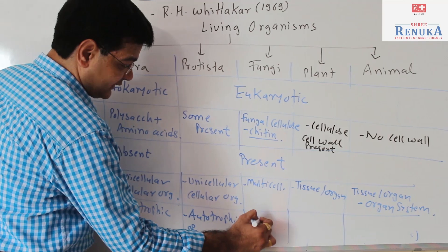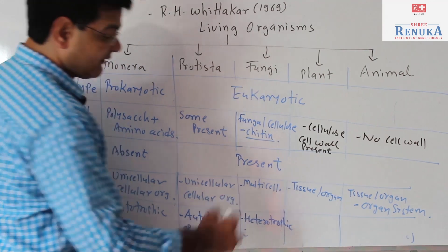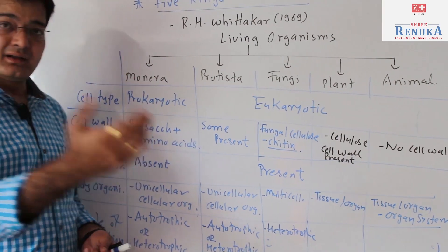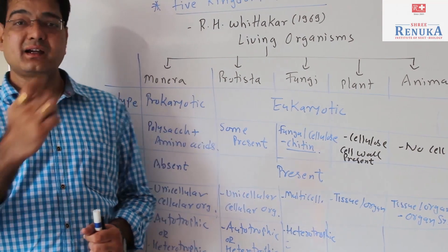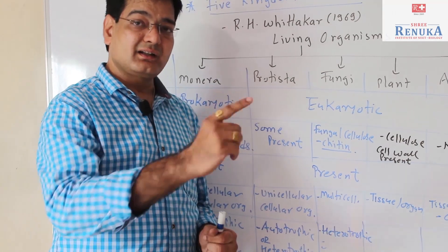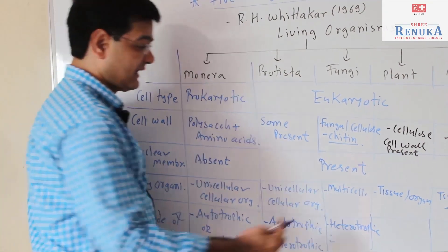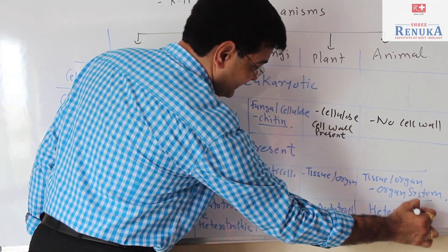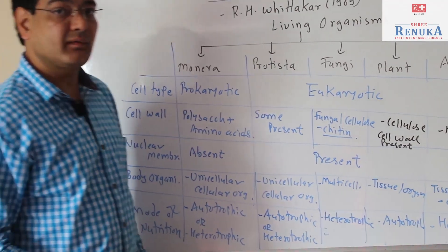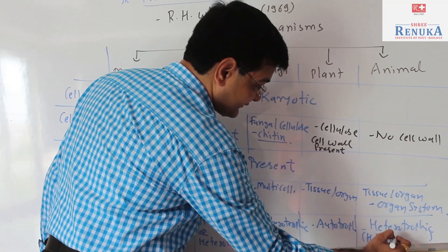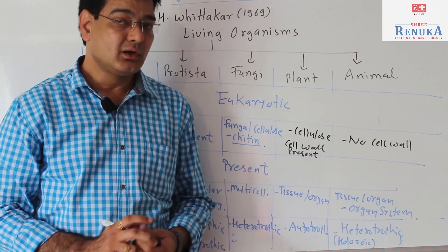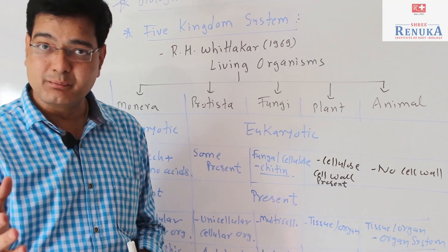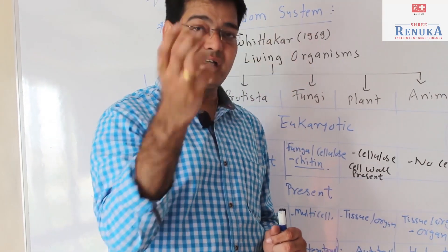Fungi are always heterotrophic — saprophytic or parasitic in their mode of nutrition. They get nutrition from decaying organic matter, making them saprophytic, or in some cases fungi get nutrition from other organisms, mainly plants, making them parasitic. In the case of plants, all plants are autotrophic in mode of nutrition. Animals are always heterotrophic — in the case of animals, we use the word holozoic mode of nutrition. For example, amoeba engulfs food particles with the help of pseudopodia, which is a phagocytic process, but the nutrition is called holozoic.